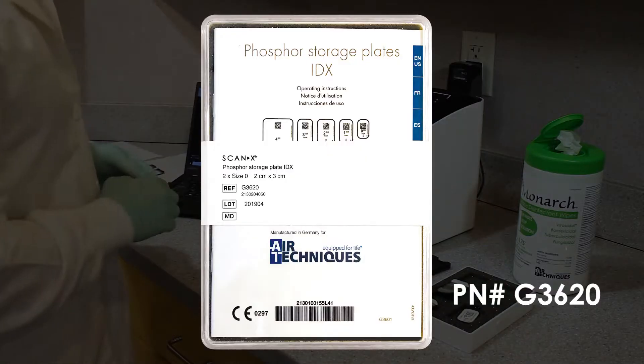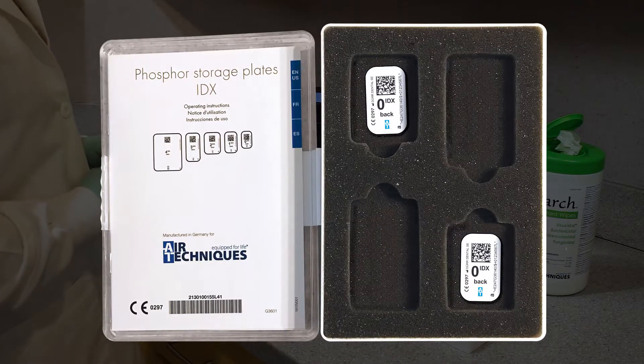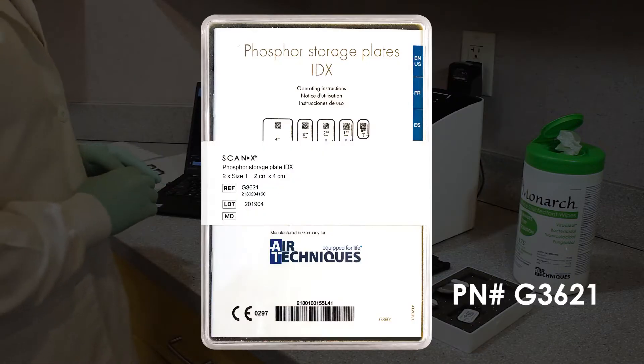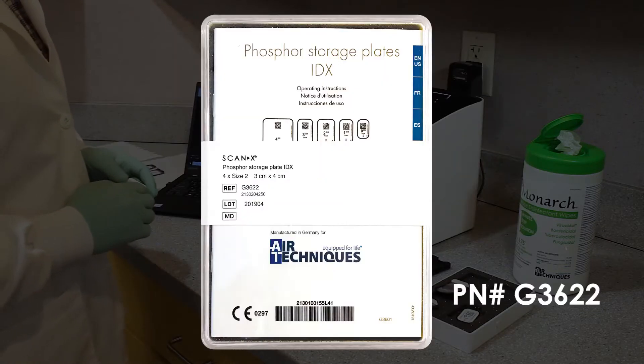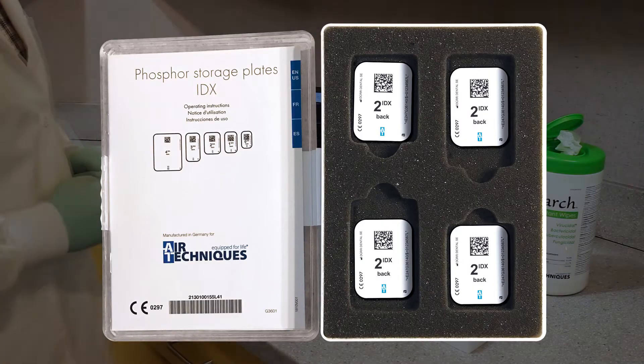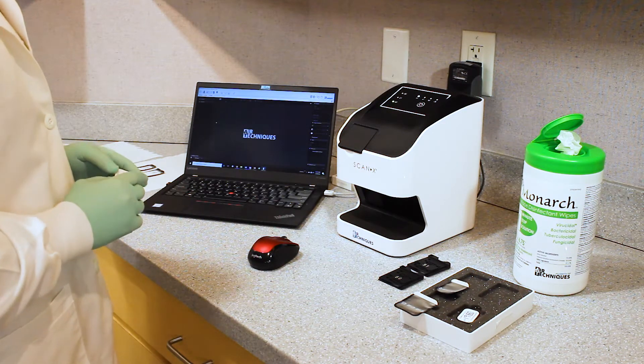You are looking at G3620 for the size 0, package of 2. You are looking at G3621, which is the size number 1, package of 2. And then G3622, which is the size number 2, package of 4, like our other phosphor storage plates.